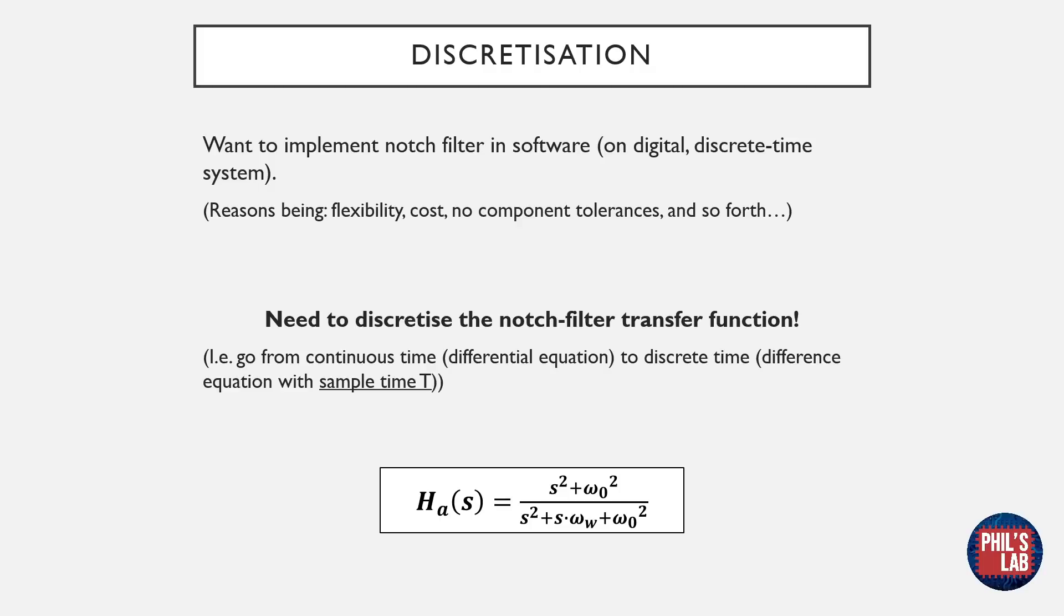However, to do this, we need to discretize our notch filter transfer function. That is, we need to take our continuous time model, which in essence is in the form of a differential equation, and convert it to discrete time. This means figuring out a difference equation that we can implement programmatically.